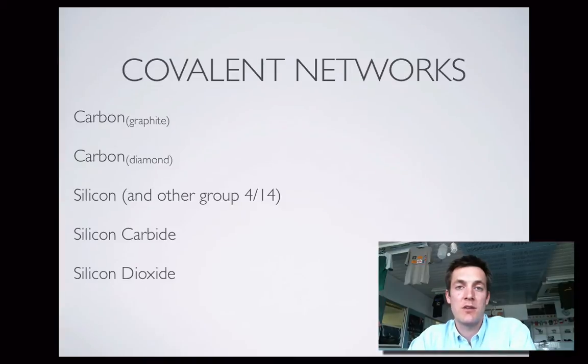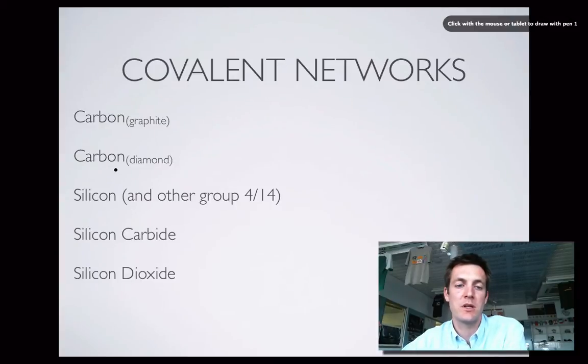Here are the covalent networks that you should be able to remember. If anything else comes up in a test or an exam, they will tell you it's a covalent network if they want you to know that, but these ones are important to remember. We've got two very important forms of carbon: graphite and diamond. We've got silicon which is also in group 4, just like carbon, but there's also other group 14 elements that might also be expected to form covalent networks. Silicon carbide which is just a compound of those two that we've talked about already and one other example: silicon dioxide. If you can remember those, that'll be good because they might ask you recall questions about them.